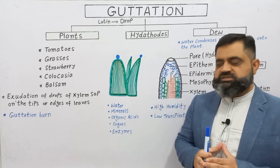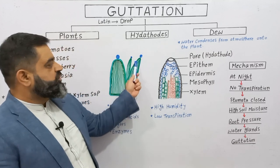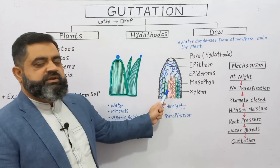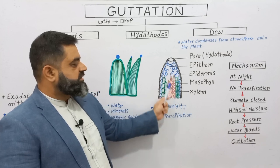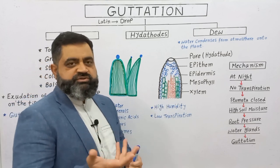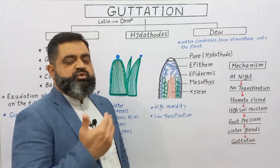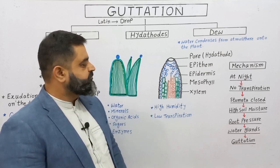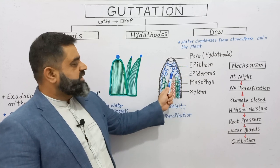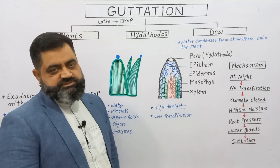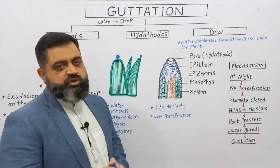How does guttation take place? To understand this we have to look at the internal structure of a leaf. I have taken a small cross-section of a leaf here. The outermost layer is the epidermis; inside are mesophyll cells which do photosynthesis. In the center are xylem vessels that transport water and contain xylem sap. On the tip of the leaf are cells known as epitheme, which have large intercellular spaces, and at the tip there is a pore known as a hydathode.